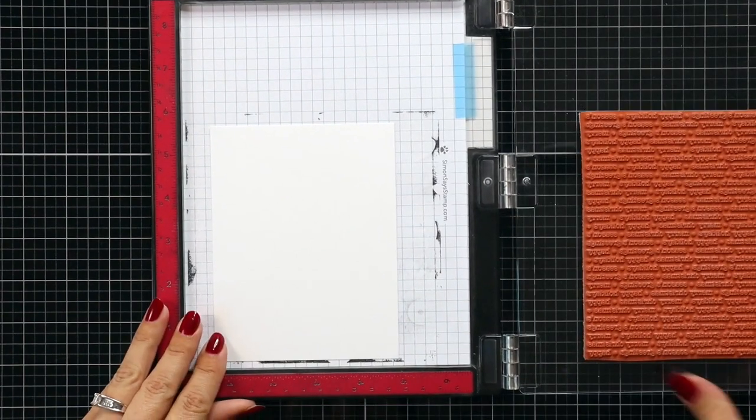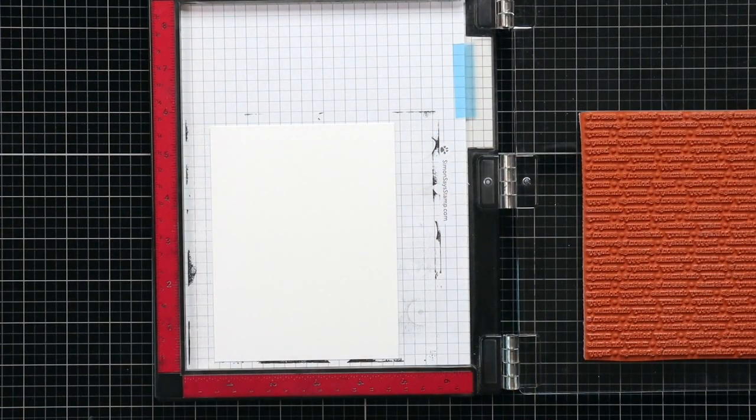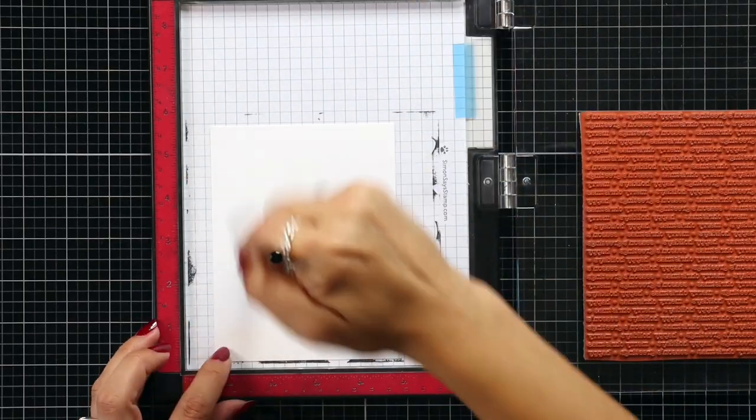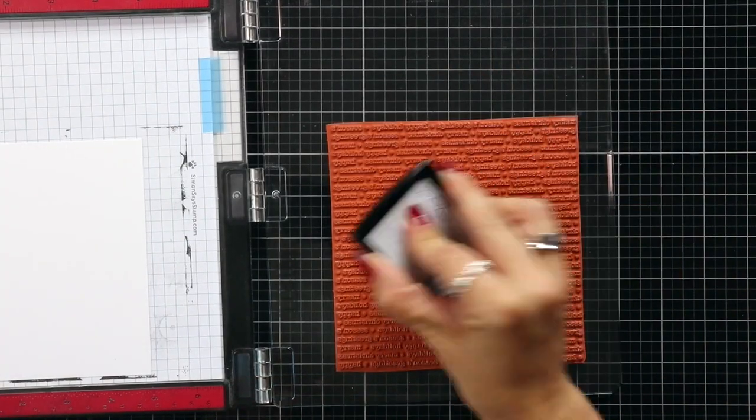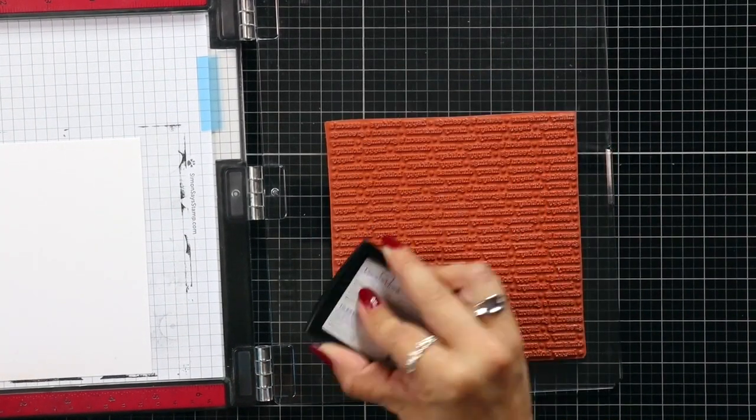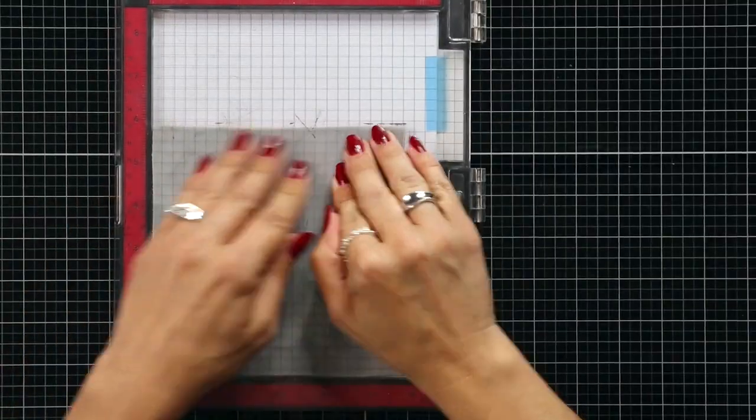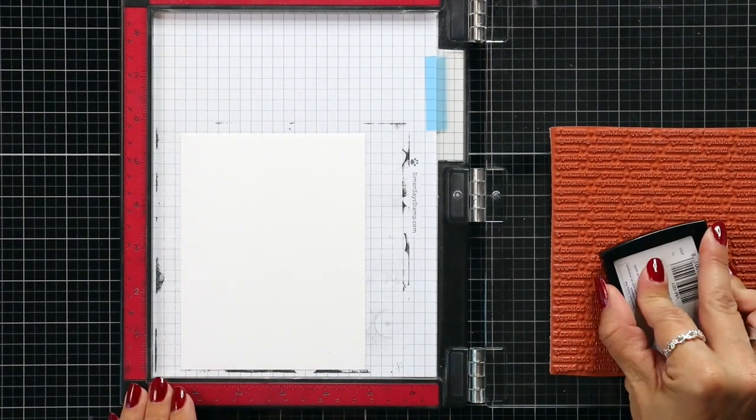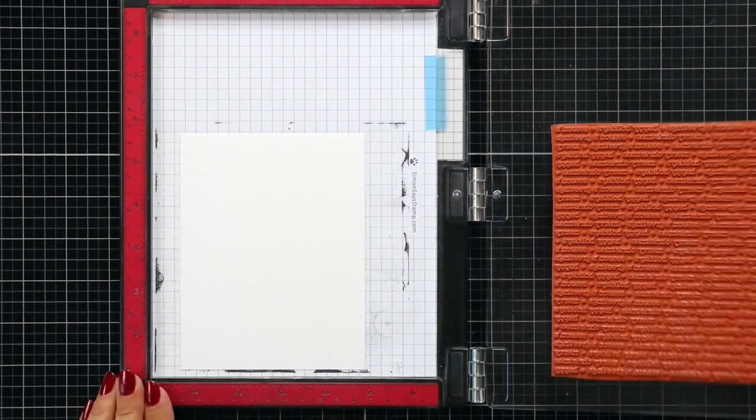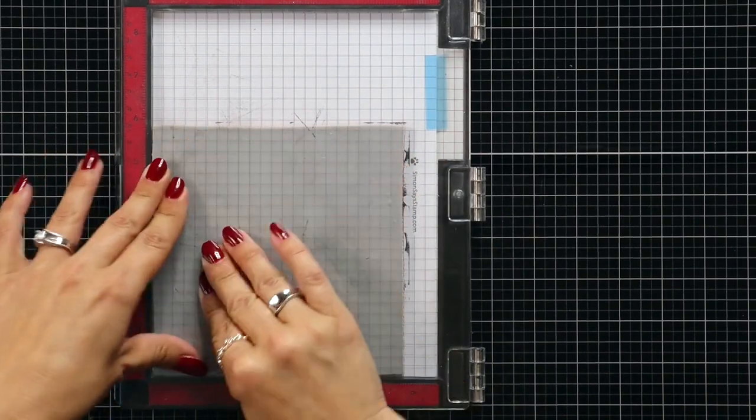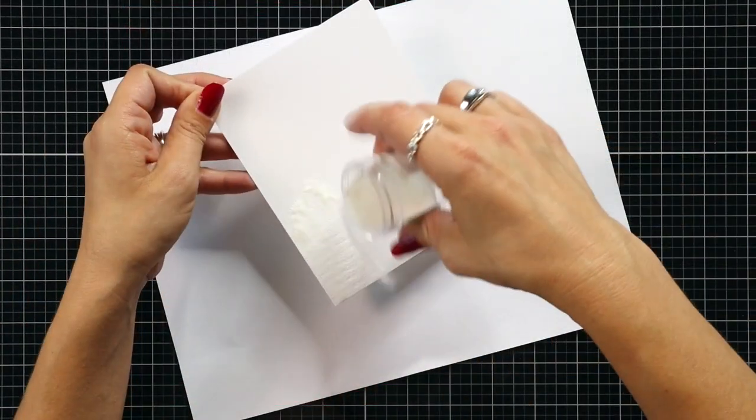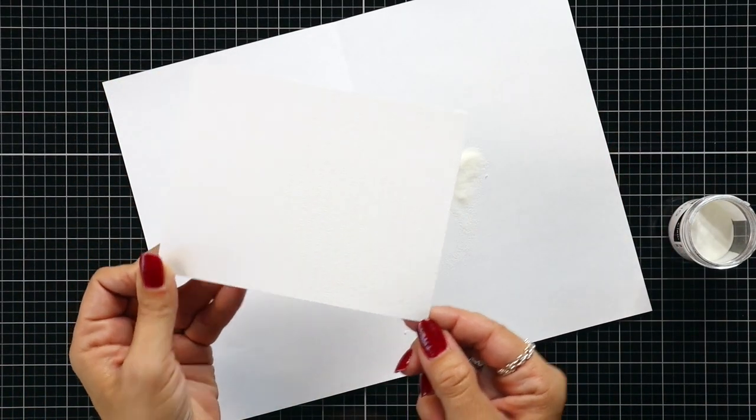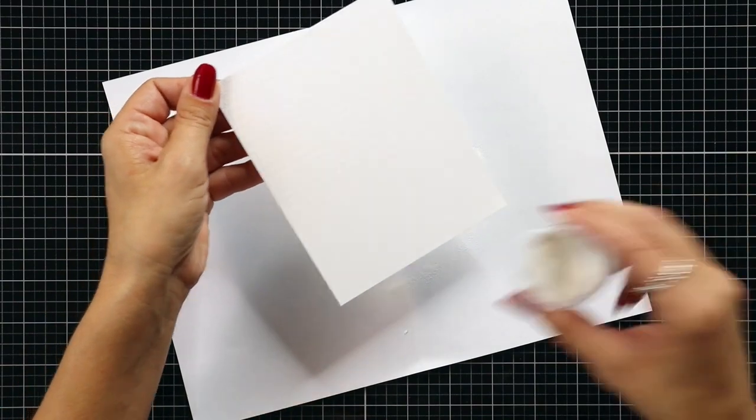One thing I would have changed in this is I used 80-pound cardstock, but I didn't think about this when I was working on the background. Since I'm going to be spraying this, I really should have used a watercolor cardstock or a heavy-stock cardstock, because that liquid just works better with a heavy-stock cardstock. The 80-pound still worked, but it was really wet and kind of bows a little bit. It's just better to work with a cardstock that is meant to hold liquid.